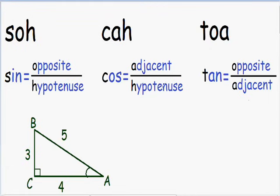Let's get started with this example. We want to find the values of the basic trig functions for angle A. The first thing I like to do is label all the sides of the triangle.